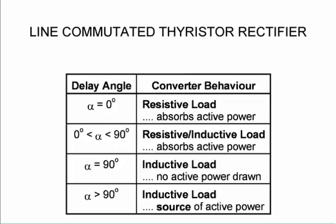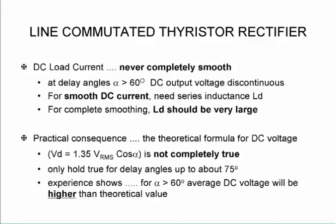So it becomes an inverter. If the delay angle is zero then the converter behavior will be like a resistive load and absorbs active power. Between zero and 90 degrees it's a combination of resistive and inductive and absorbs active power. 90 degrees is inductive, there is no active power because you have seen the DC voltage is zero. Higher than 90 it becomes an inductive load and becomes a source of active power. So we have now changed the voltage around.